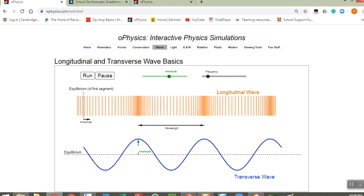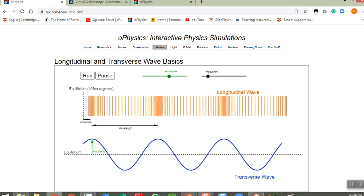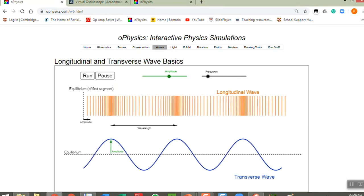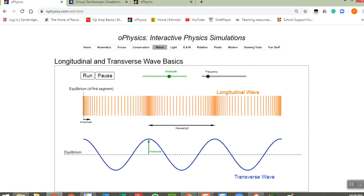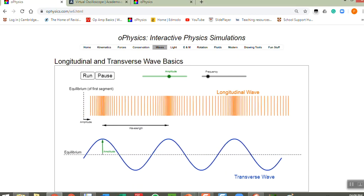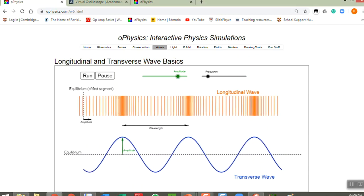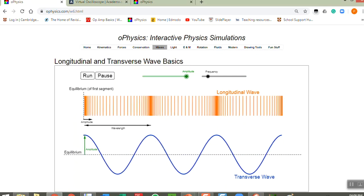So if we run here we see that the transverse wave moves up and down, and the longitudinal wave the disturbance moves parallel to the motion of the direction of the wave.